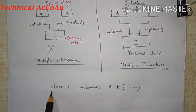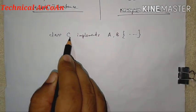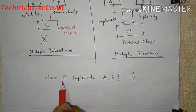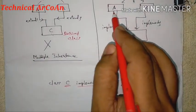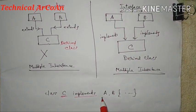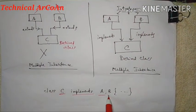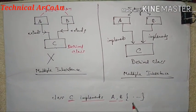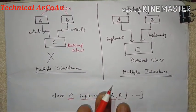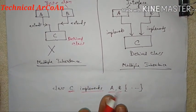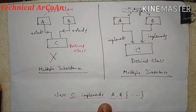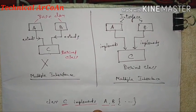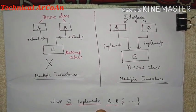So the syntax for multiple interface implementation is: class C implements A, B — where A and B are interfaces. After that we write the body of the class. This is how multiple inheritance is achieved implicitly in Java using interfaces.